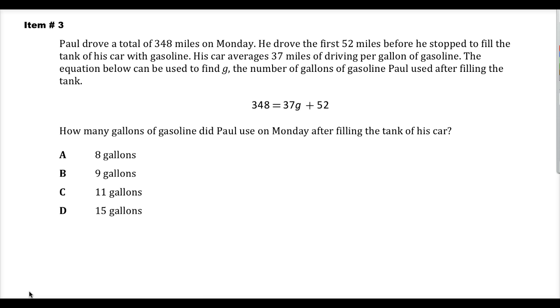Paul drove a total of 348 miles on Monday. He drove the first 52 miles before he stopped to fill the tank of his car with gasoline. His car averages 37 miles of driving per gallon of gasoline. The equation below can be used to find G, the number of gallons of gasoline Paul used after filling the tank. And then they give you the equation.